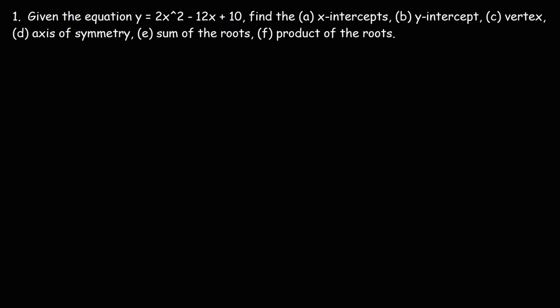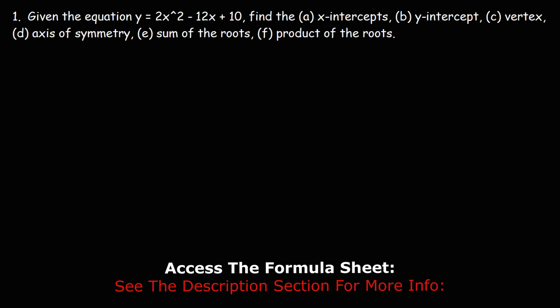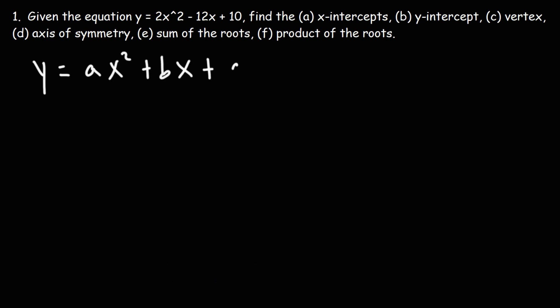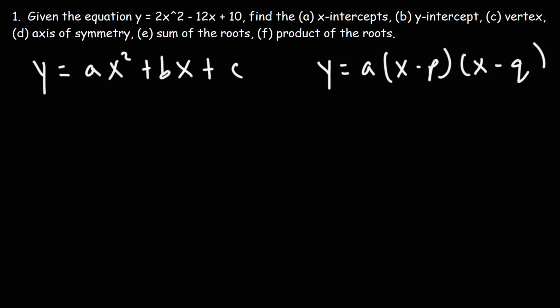In today's video, I want to go over the intercept form of a quadratic equation. Right now we have the quadratic equation in standard form, and we need to find the x and y-intercepts. It's easier to find the x-intercepts in intercept form, but it's easier to find the y-intercept in standard form. Standard form is y = ax² + bx + c, and the intercept form is y = a(x − p)(x − q). p and q are the x-intercepts, and c is the y-intercept.